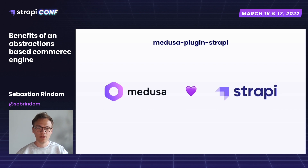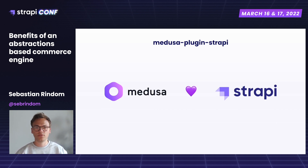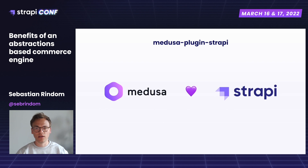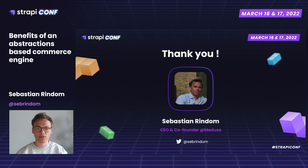We have this plugin with Strapi that when installed does a couple of things. It first syncs the products, collections, and regions you have configured in your Medusa instance between Strapi and Medusa. This allows you to enrich your product data with more fields or more complex structures and manage your products from Strapi too. Once your products are in Strapi, you can use your data in any storefront and leverage a fully headless setup. I'm really excited to see new Strapi-Medusa projects coming out and I highly encourage you to check out our repository and explore the cool stuff you can accomplish with Medusa.